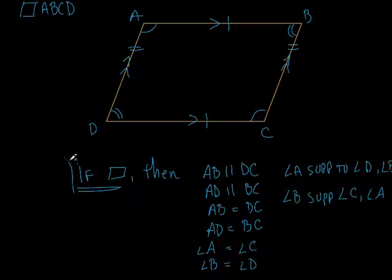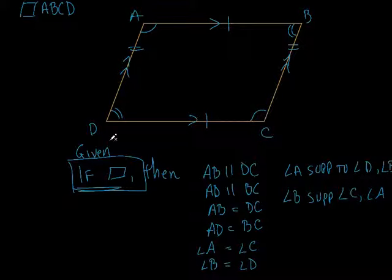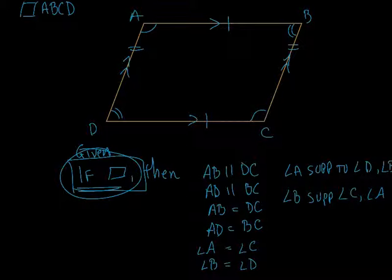What am I getting at? This is our 'if' — this is what's given. It's given that we have a parallelogram. As soon as they tell me this thing's a parallelogram, all these things are going through my head. If you're taking the SAT and you see a problem that says this is a parallelogram, all these things should be flooding through your head: sides are parallel, sides are equal, opposite angles are equal, diagonals bisect each other.